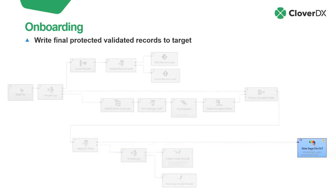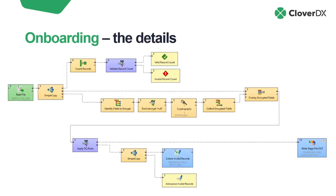The last step is writing the transformed and validated records to our target endpoint. When development of the whole pipeline — the top-level orchestration as well as this detailed ingestion — is complete, the whole process is ready to be moved from CloverDX Designer over to CloverDX Server, where it can operate in production.